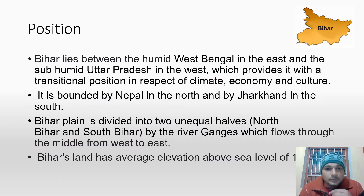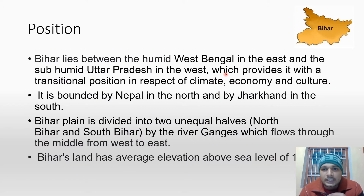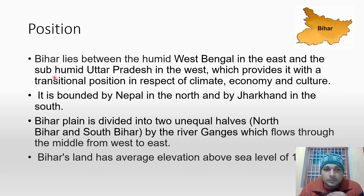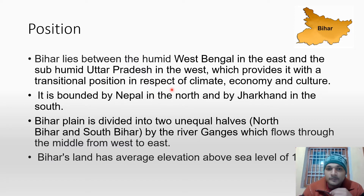Regarding Bihar's location, as the map shows, it lies in the middle of the region between West Bengal and Uttar Pradesh. West Bengal is a very humid region, and U.P. is a sub-humid type of region, so this is why Bihar has a transitional position in terms of culture, economy, and climate.